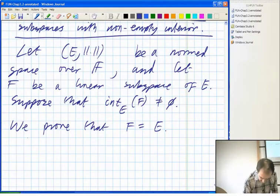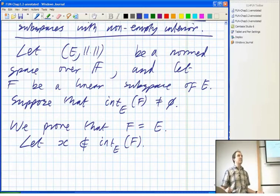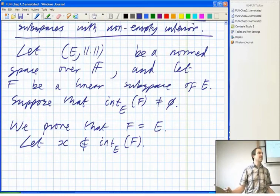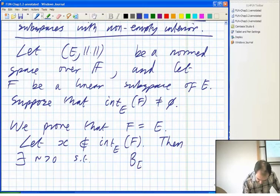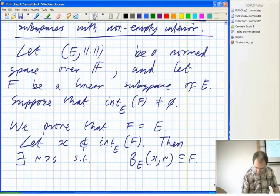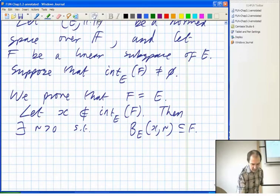Let X be in the interior with respect to E of your subspace F. Then X is in your subspace, and some ball in E centered around X is also in your subspace. So then there exists an R greater than 0 so that the ball in E centered on X radius R is contained in F. So far, that's just the definition of the interior. Notice the ball is taken in E, so that's an ordinary open ball in E.